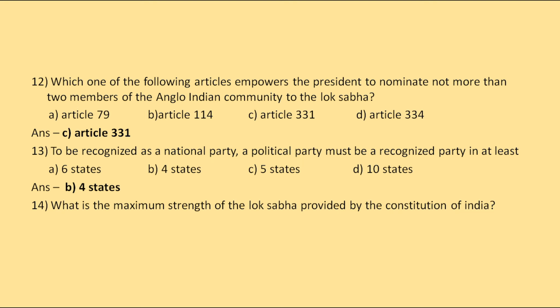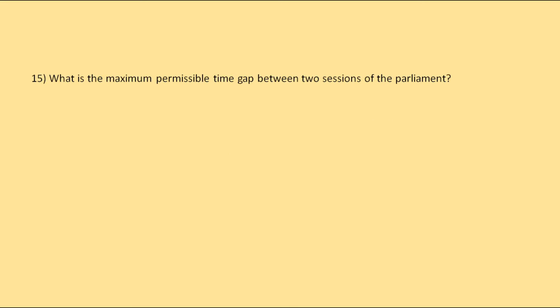What is the maximum strength of the Lok Sabha provided by the Constitution of India? The options are 552, 545, 530, or 500. The correct answer is 552.